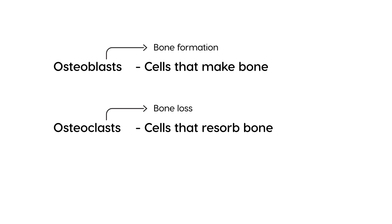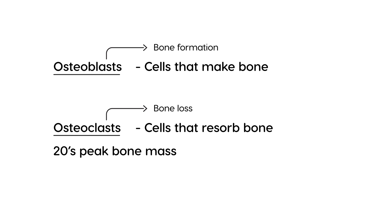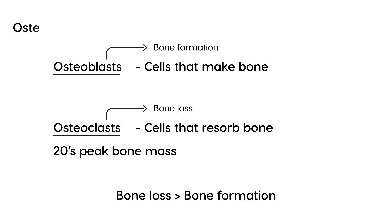Bone formation is closely balanced with bone loss in a healthy young adult. When you're in your 20s, you have a peak bone mass. Unfortunately, over time the osteoblast and osteoclast relationship changes, and as the person ages, the amount of bone loss slowly outweighs bone formation. When that occurs, bone density decreases. First you go through osteopenia, which is a precursor to osteoporosis, and then full-blown osteoporosis later on.